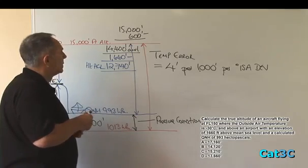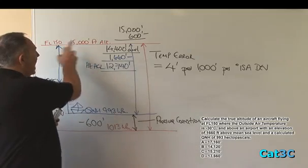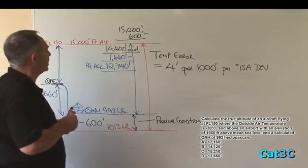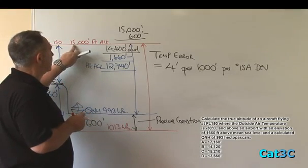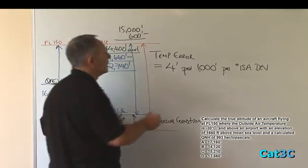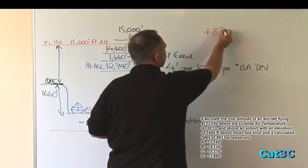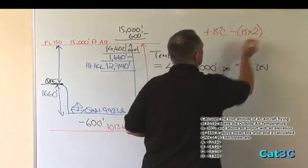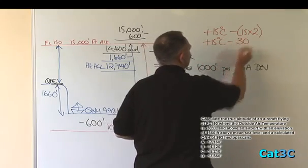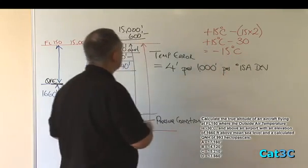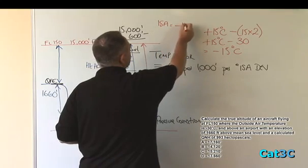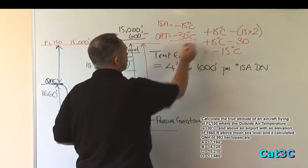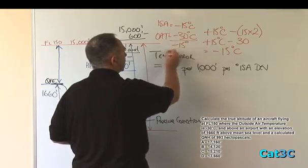What is the ISA deviation? Well, the ISA deviation is based on the difference between the actual outside air temperature and what should be the outside air temperature in a standard ISA atmosphere. To calculate that, we need to look at what should be the ISA temperature at 15,000 feet pressure altitude. And to do that, we start with a starting point of plus 15 degrees centigrade and subtract from that 2 degrees for every 1,000 feet. Which gives me plus 15 minus 30 equals minus 15 degrees centigrade. So ISA equals minus 15 degrees centigrade. The actual outside air temperature is minus 30 degrees centigrade, which gives us an ISA deviation. Outside air temperature is 15 degrees colder than ISA.